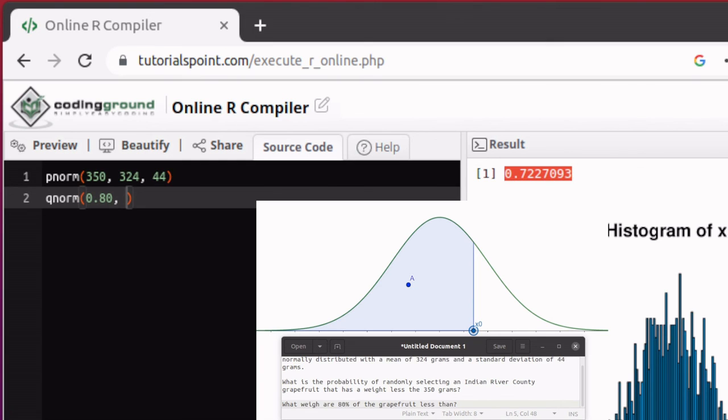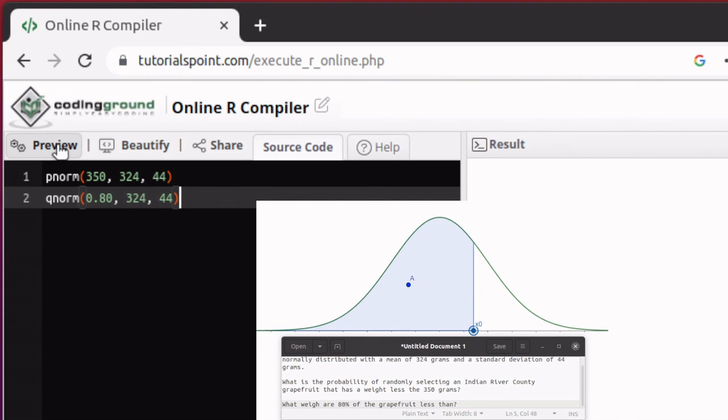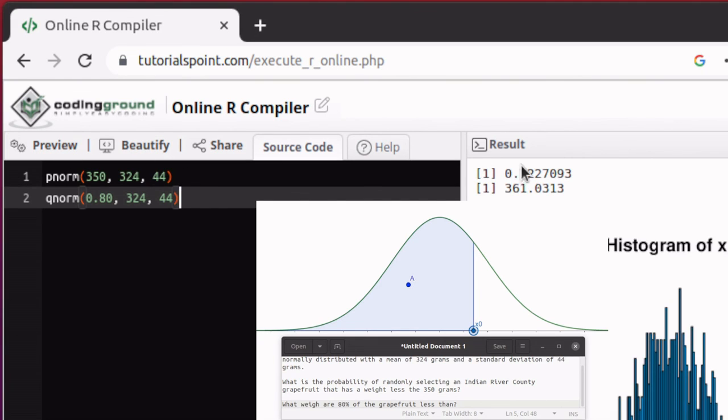So we tell R that we're looking for the 80th percentile, 0.80, in a normal distribution with a mean of 324 and a standard deviation of 44. Now if we run that script, it does both of those calculations for us. The first probability was 72% and this value, 361 grams, a little bit more than that, is the 80th percentile.